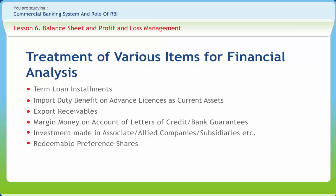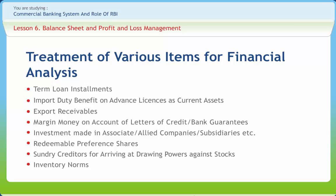Preference shares redeemable within one year are to be treated as current liabilities. However, preference shares redeemable after one year are treated as term liabilities. It is advised that flexibility may be provided in the system of netting sundry creditors from the value of stocks for allowing drawing power after providing for stipulated margin. Banks' existing instructions permit flexibility of approach in accepting inventory norms while assessing working capital requirements of the borrower. However, they do not provide any flexibility to the branches in the levels of different items of inventories vis-a-vis those accepted at the time of assessment of MPBF while assessing value of inventories for calculating drawing power.